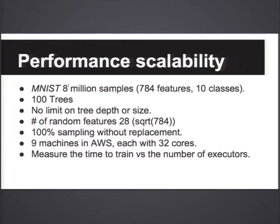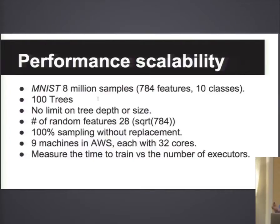This dataset is MNIST with 8 million samples. The original MNIST only has 60,000 samples, but they did a lot of affine transformations — it's basically handwritten digits, so you can transform them and get extra samples. We have 784 features, 10 classes, and we're training 100 trees with no limit on tree depth or size. The number of random features per node is the square root of 784, which is 28. We use 100% sampling without replacement. Our test machines are in an Amazon cluster with nine machines, each with 32 cores.